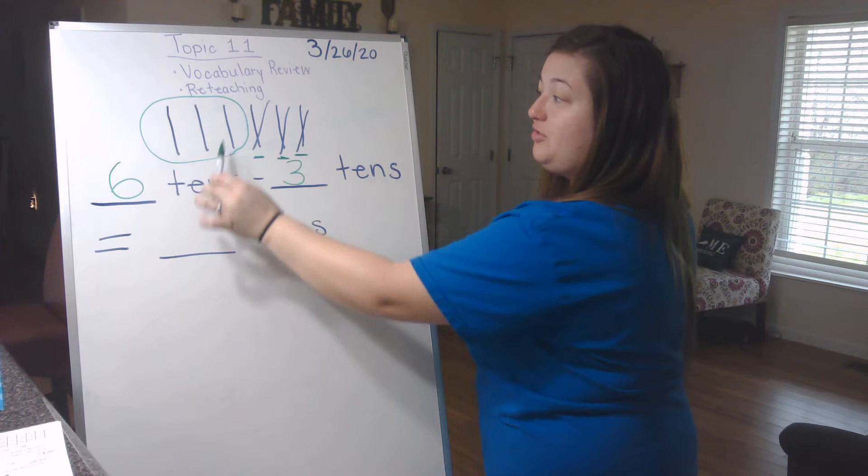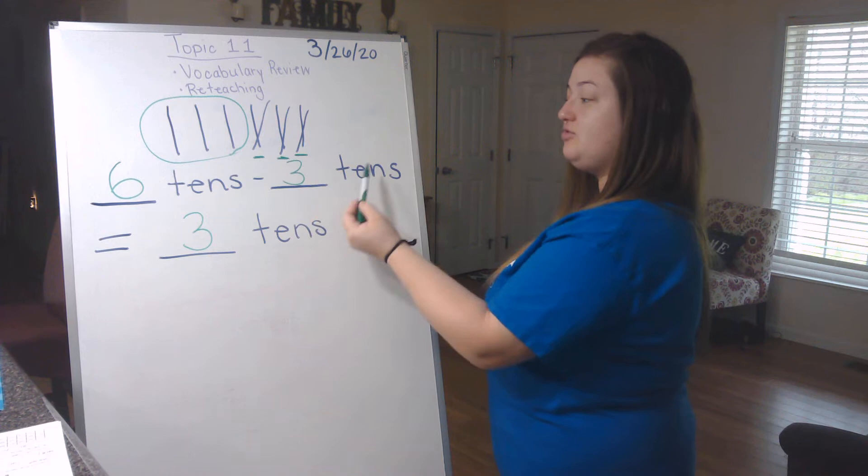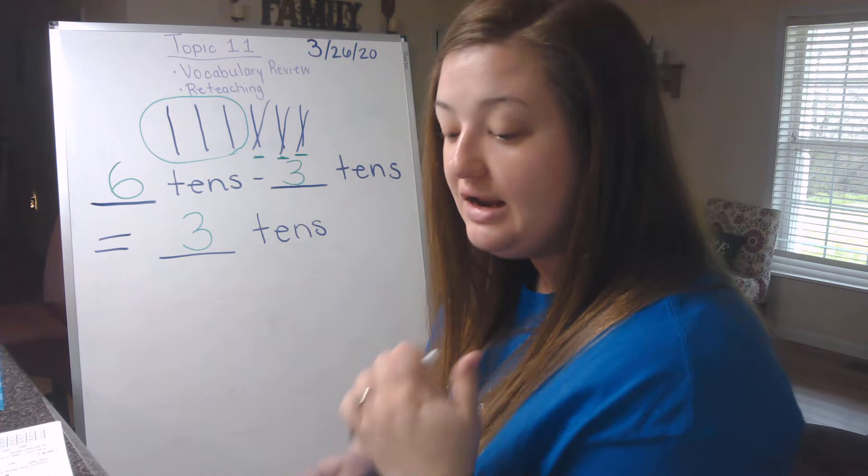So our subtraction problem is going to say six tens subtract three tens equals, and then how many tens do you have left that were not marked through? Well, I've got one group, two group, three group. So six tens subtract three tens equals three tens. That's all you do for number one.